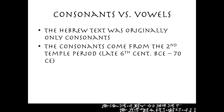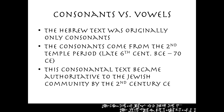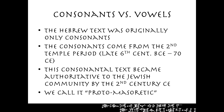These consonants form the base of the Masoretic Text and they come from the Second Temple Period — the late 6th century until the fall of the Second Temple in 70 CE. This consonantal text became authoritative to the Jewish community by the 2nd century CE. The point to take home is that the consonants were there, not the vowels — that doesn't mean vowels weren't being pronounced, just that they weren't written. What we see in something like BHS has the vowel points added later, and there are different systems of vowel points added in different Hebrew traditions. We call this consonantal base proto-Masoretic, because it doesn't have the Masora and it's the foundation on which the Masoretic Text tradition was built.